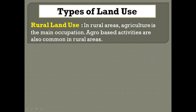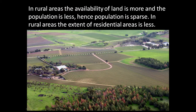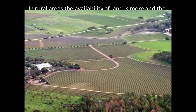Let us study the types of land use. In rural areas, agriculture is the main occupation. Agro-based activities are also common in rural areas, which influences the location of rural settlements. Hence, these settlements are located close to agricultural fields and forest areas. In rural areas, the availability of land is more and the population is less, hence population is sparse. The extent of residential areas is less, and as you can see, the houses are very far from each other and the land is distributed for different farms.